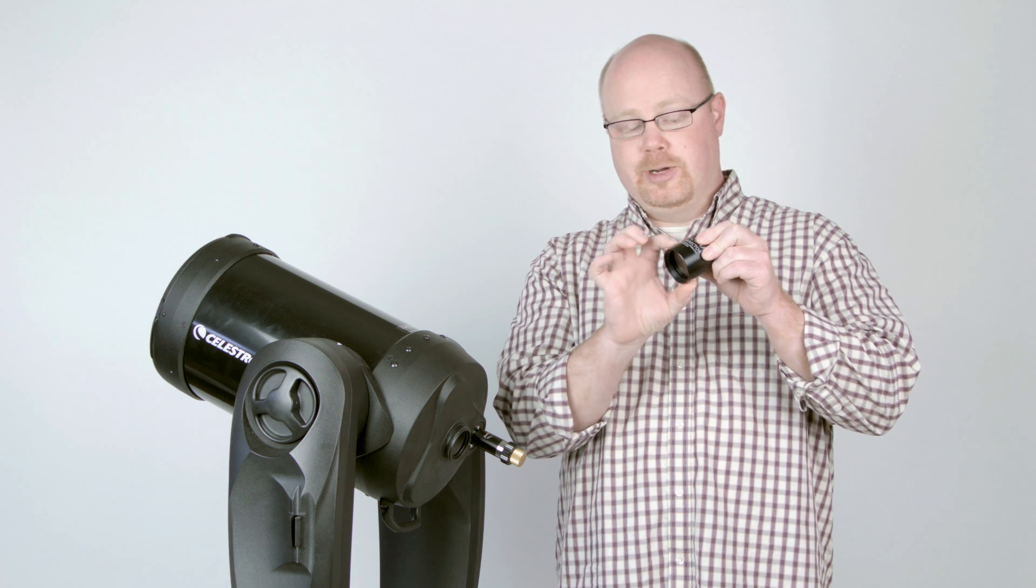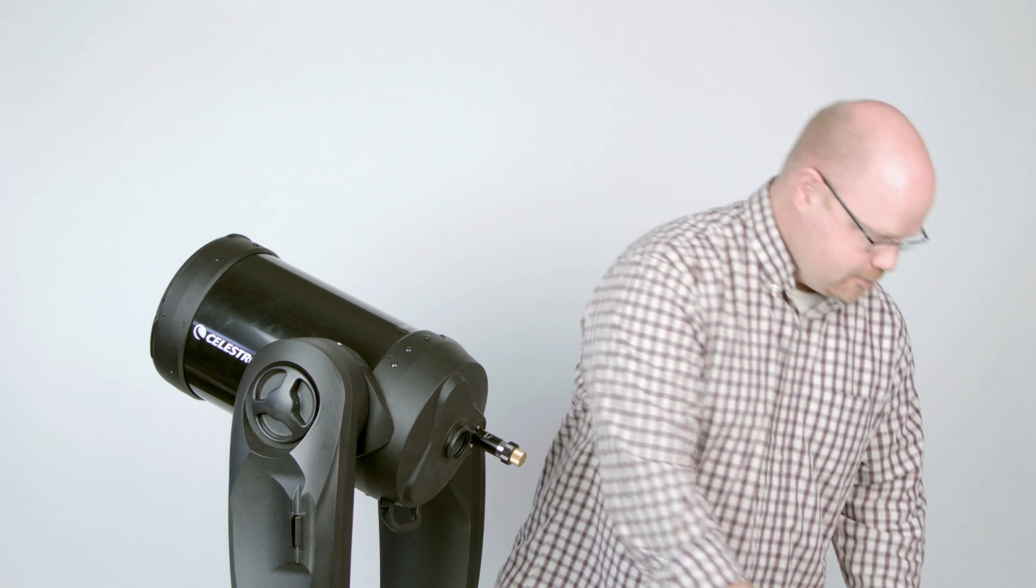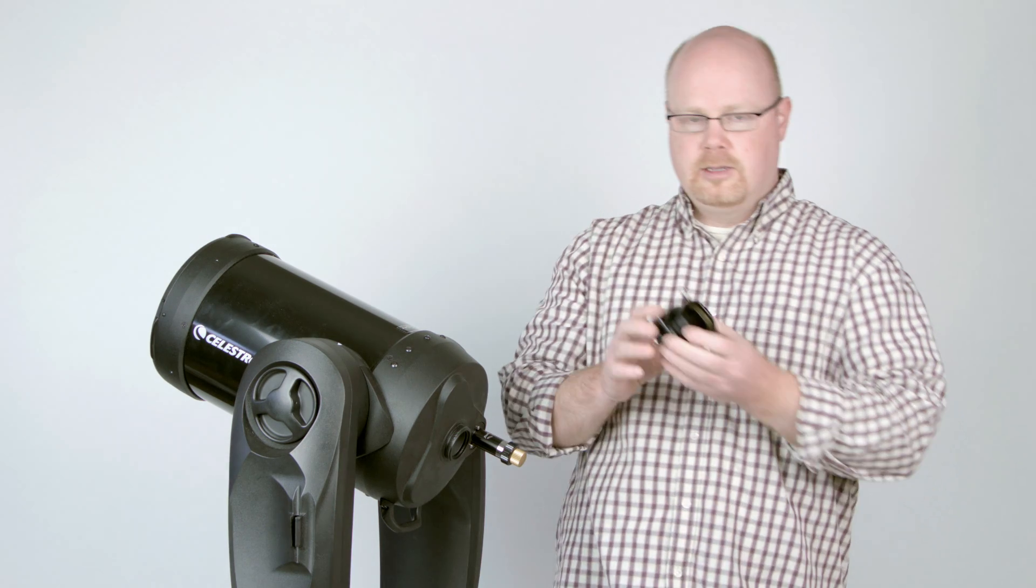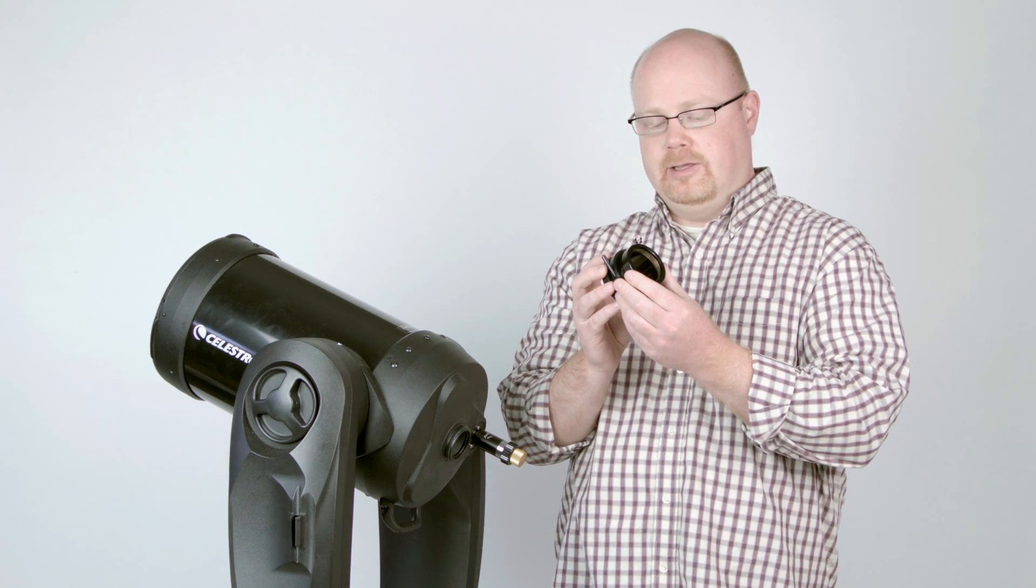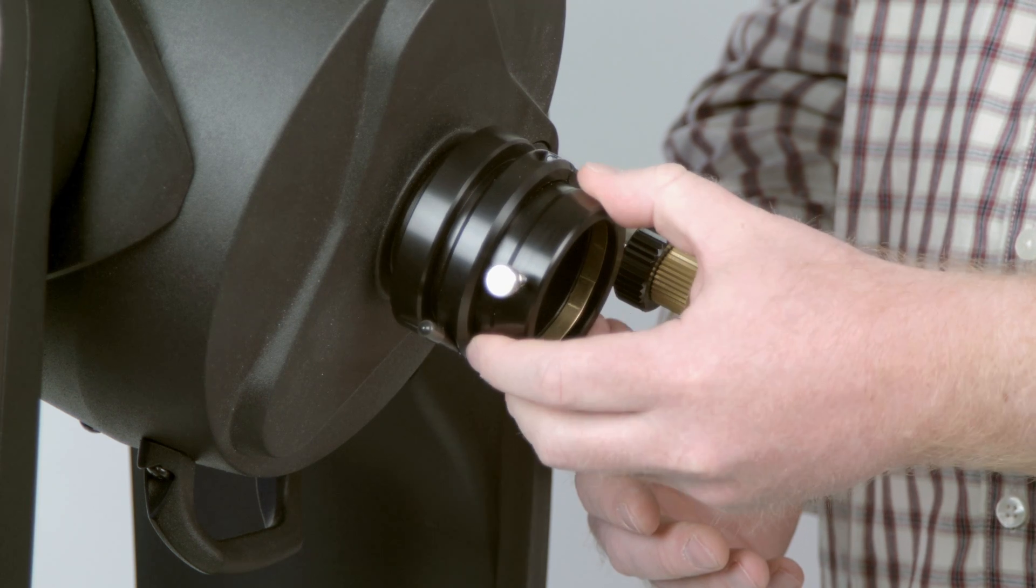The SCT corrector has a two-inch diameter barrel, so it fits into a two-inch visual back. You can use a two-inch visual back like the Virtual View that Starizona makes, and this threads onto the back of the Schmidt-Cassegrain telescope.